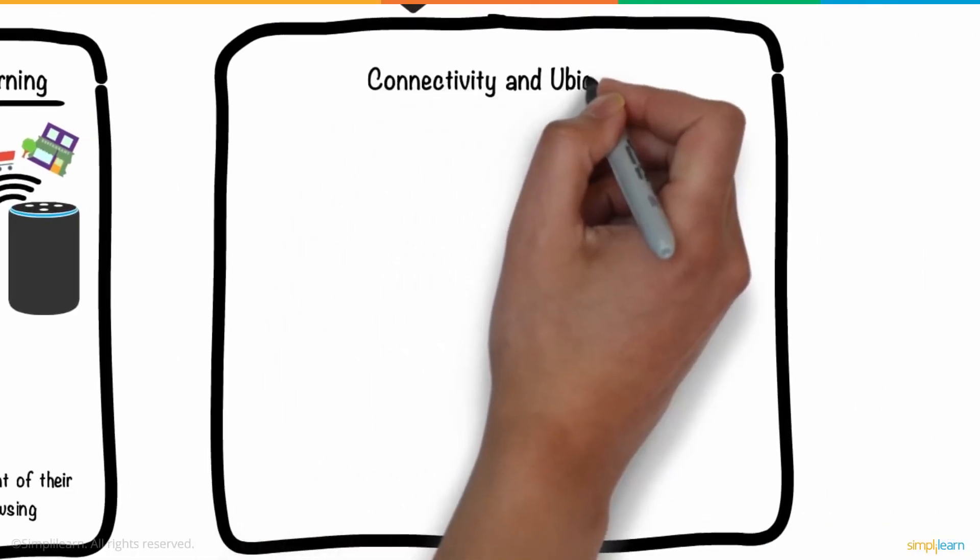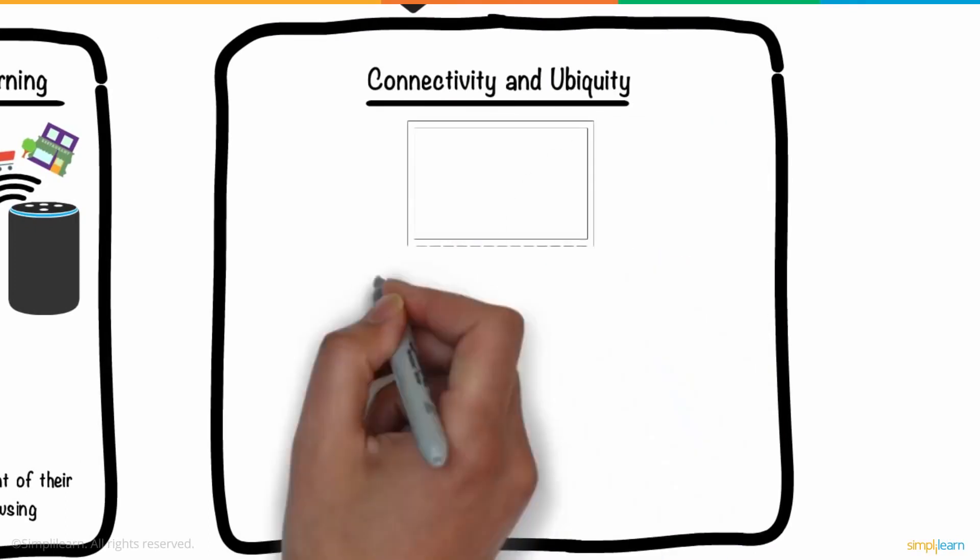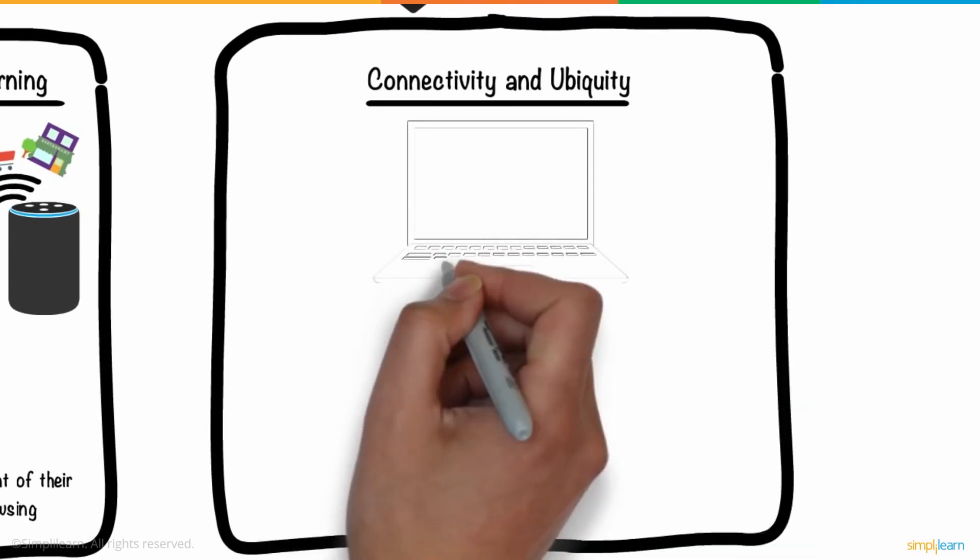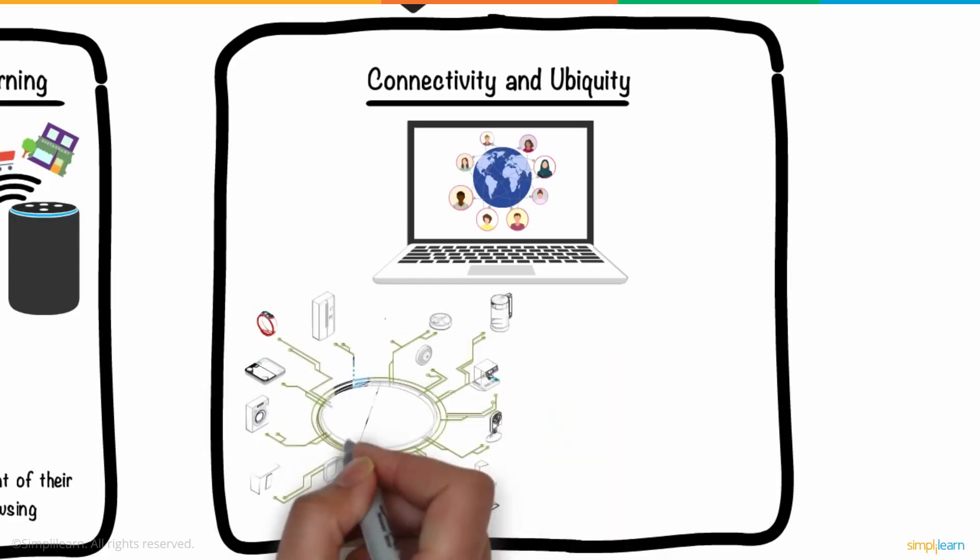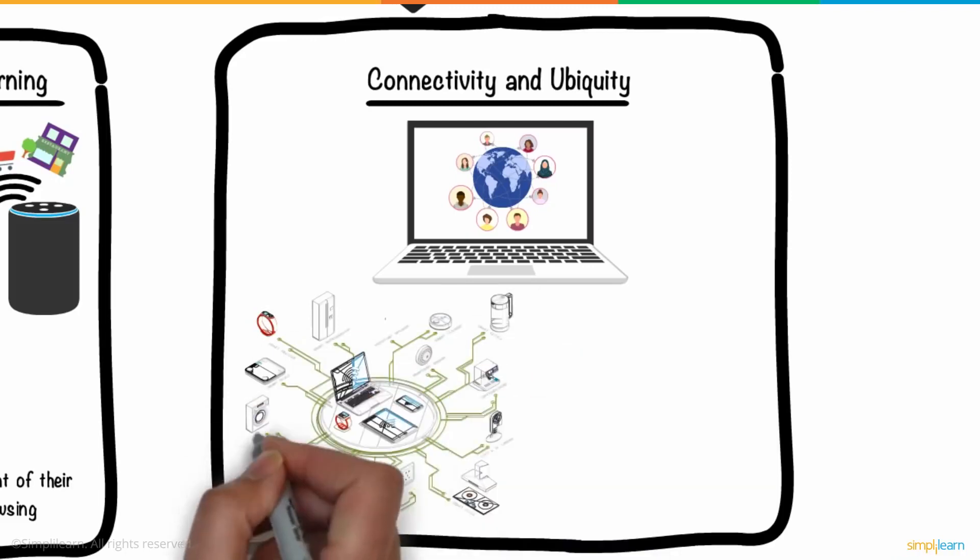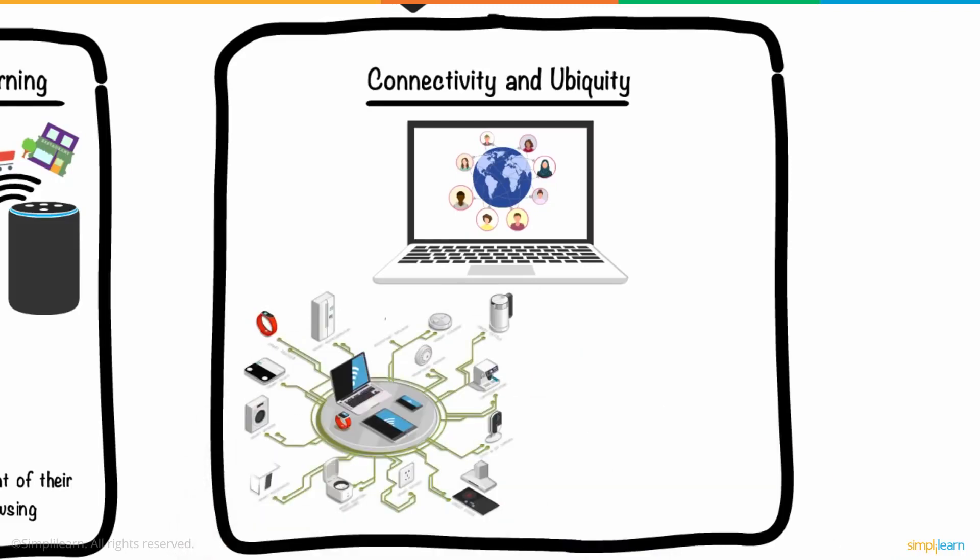Fourth is connectivity and ubiquity. In Web 3.0, the internet will be accessible to everyone, anywhere, at any time. Because IoT, Internet of Things technology, will launch in several new smart devices. These internet-connected devices will no longer be limited to PCs and smartphones as they were in Web 2.0.